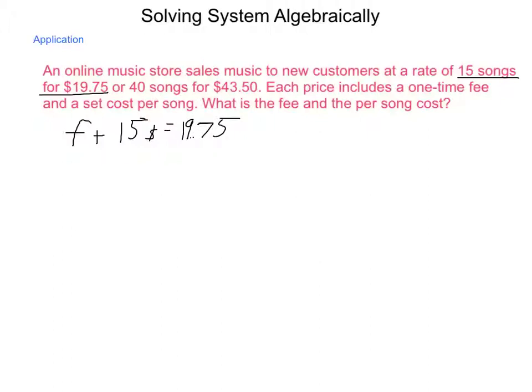We know we have 15 songs for $19.75, and that includes the fee. So I have fee plus 15 songs for $19.75. Then I get 40 songs for $43.50. So again, that is the fee plus 40 songs is $43.50. And I'm going to solve this for the fee and the cost per song. Now I can take either equation and isolate one of the variables. I choose to do it with the second one. So F = -40s + $43.50.